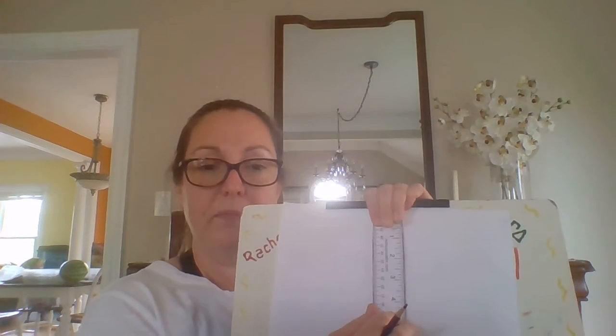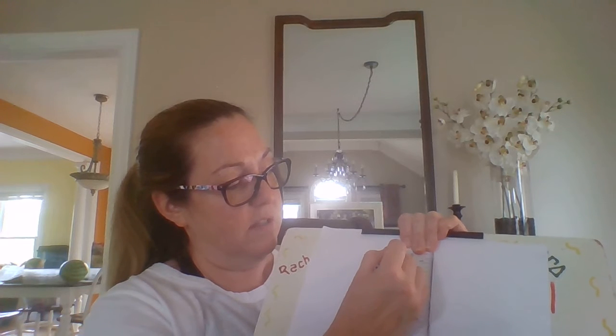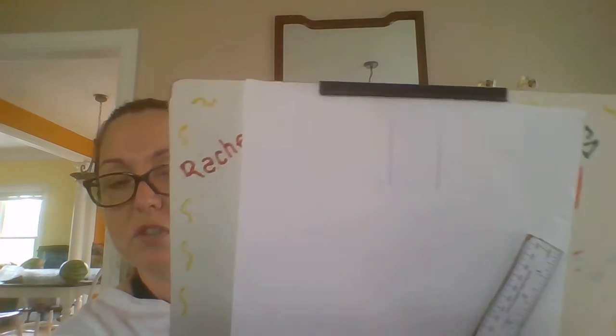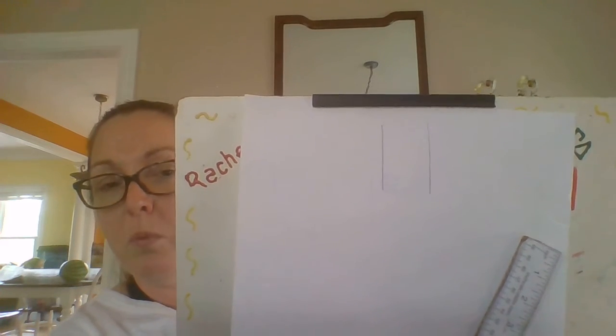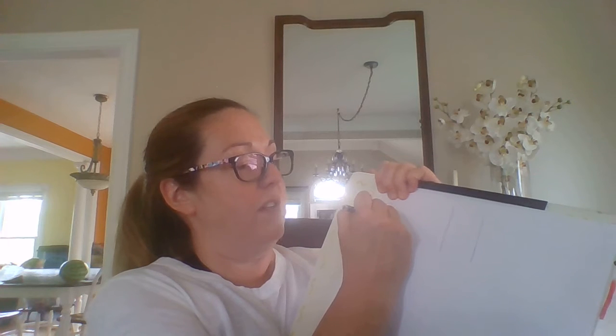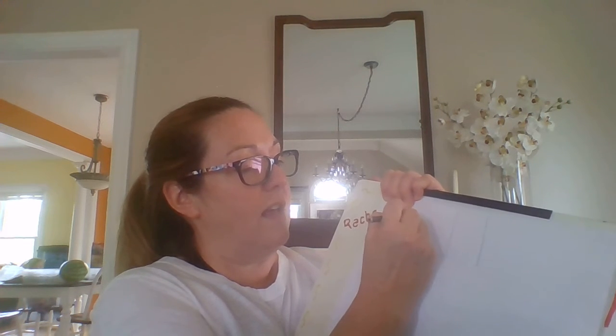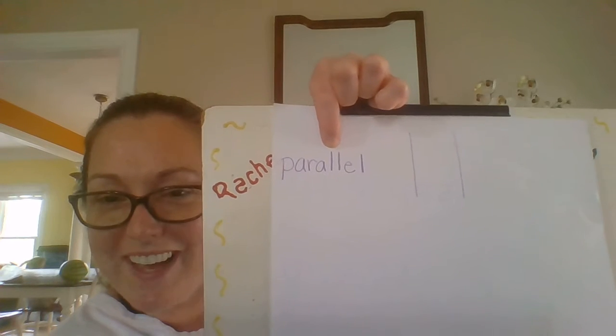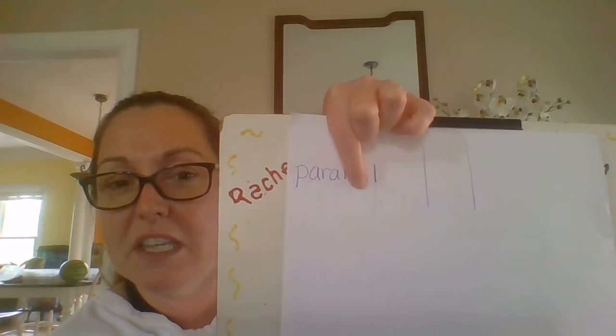Now let's talk about parallel lines. Get your straight edge tool. Lay it vertically on your paper and draw a line, then come on the other side of your ruler and draw it down the same amount. When you move your ruler, you have two straight vertical lines. These two straight vertical lines are what we call parallel lines — p-a-r-a-l-l-e-l. See the two L's right here together.